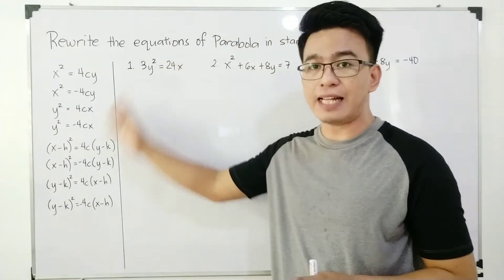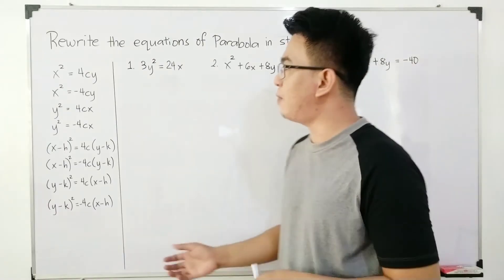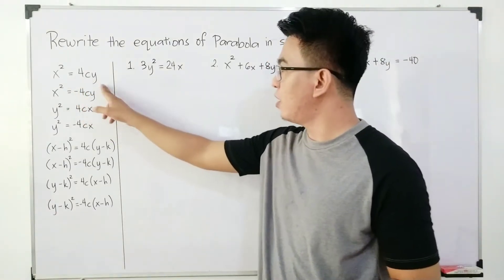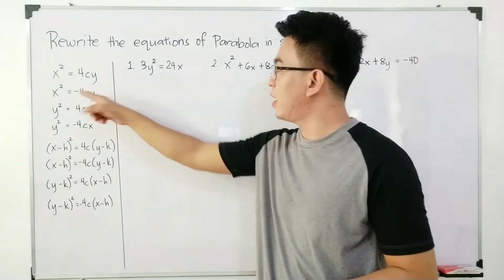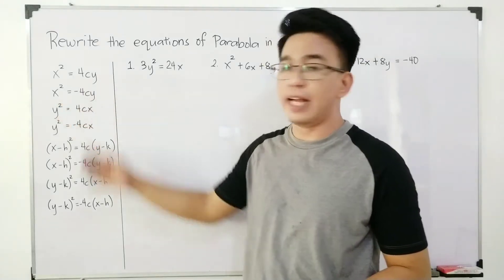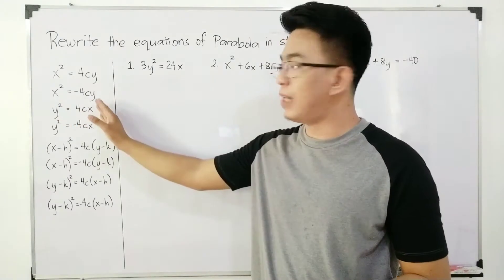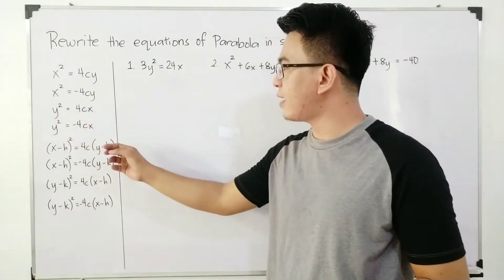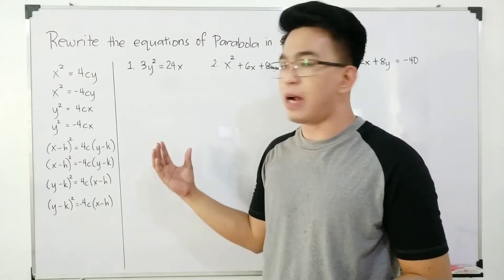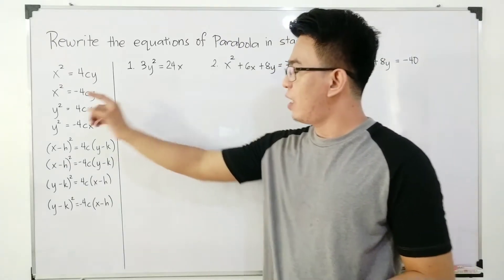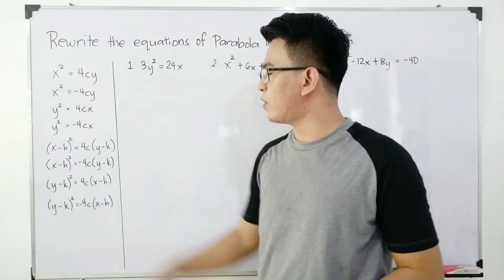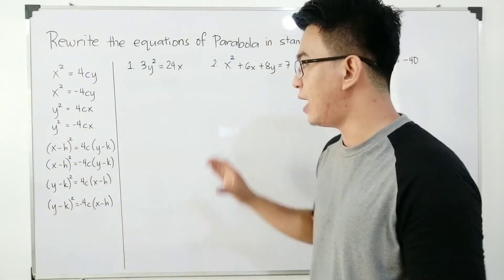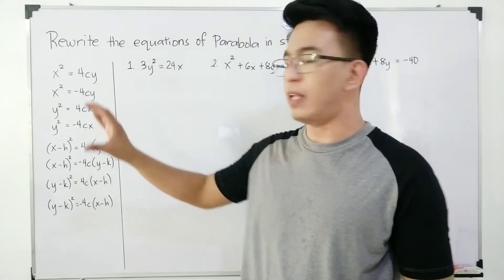We have here different standard forms of the parabola. The first one is x² = 4cy, and this one opens upward. And x² = -4cy, the parabola opens downward. We have y² = 4cx, in which the opening of the parabola is to the right. And lastly, y² = -4cx, in which the opening of that parabola is going to the left.